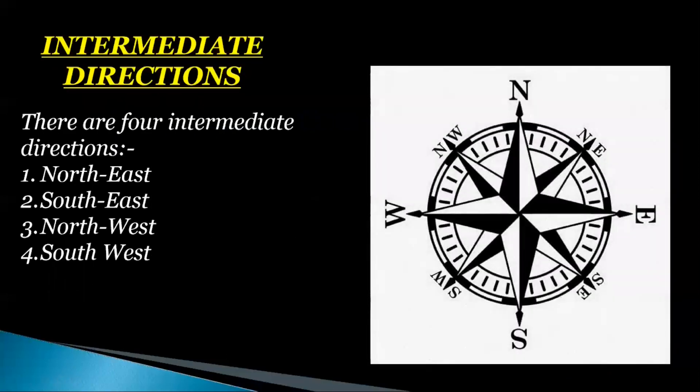Children, you know, other than 4 Major Cardinal Directions, there are 4 Intermediate Directions. These are North East, South East, South West, and North West. North East lies between North and East. South East lies between South and East. South West lies between South and West. And North West lies between North and West.